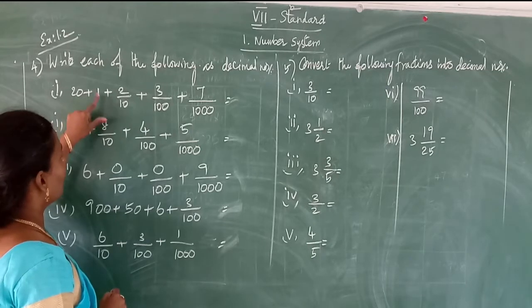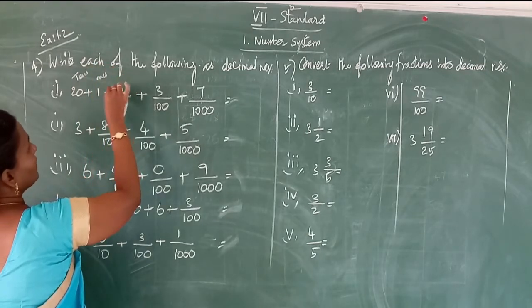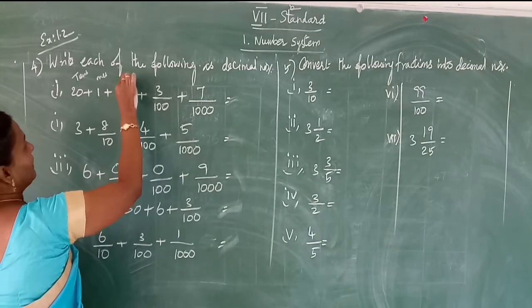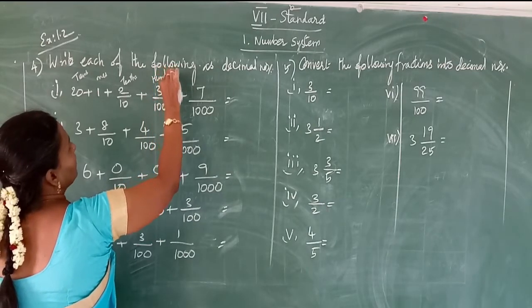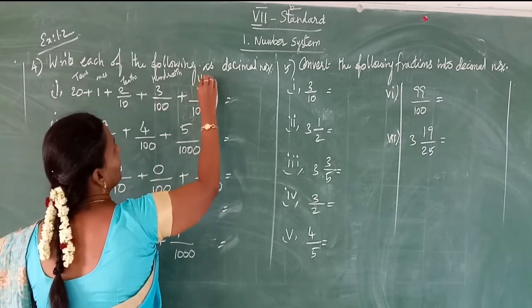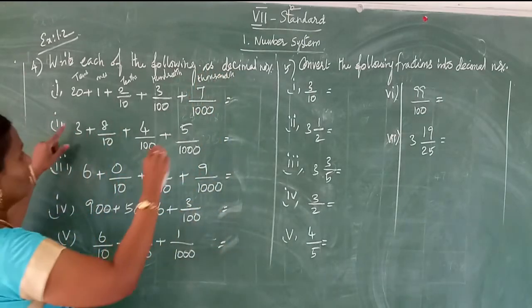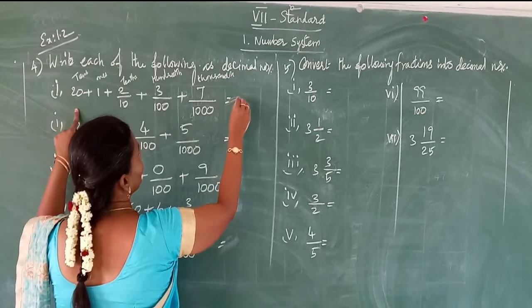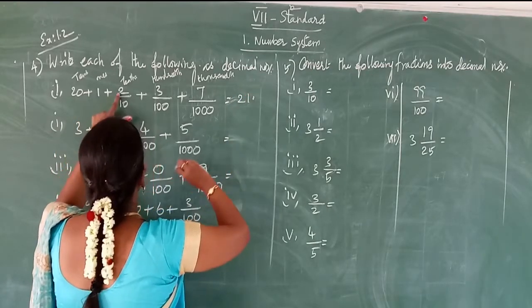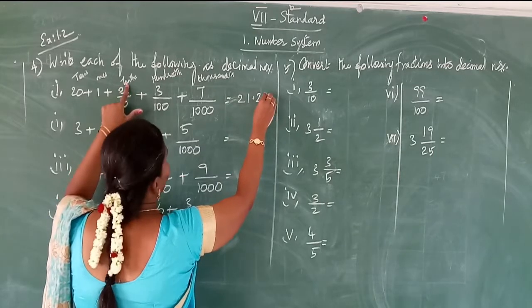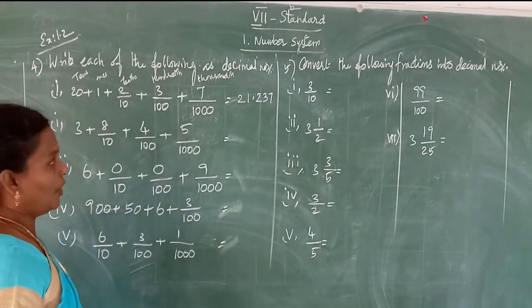So 20 plus 1: the tens space is 2 and the ones space is 1, giving 21. In the decimal part: 2 in the tenths place, 3 in the hundredths place, and 7 in the thousandths place. So 21.237.